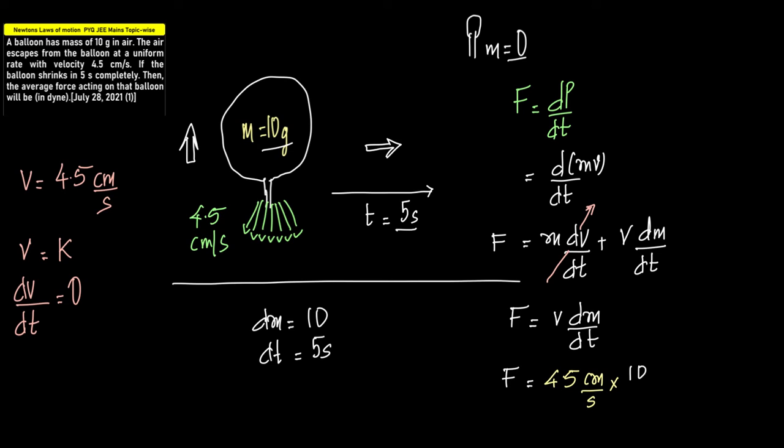Therefore, this is 10 grams per 5 seconds. Now, why am I emphasizing on units? It's because the answer is asked in dynes. So F becomes 4.5 into...